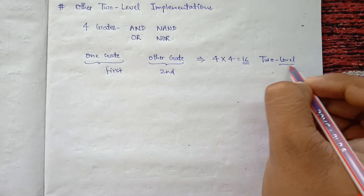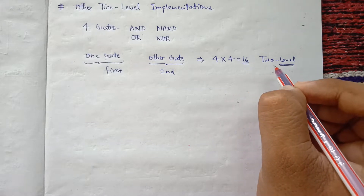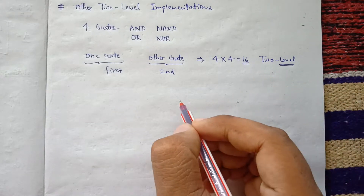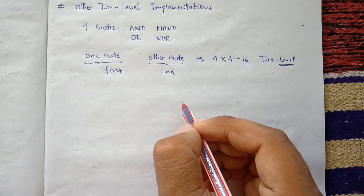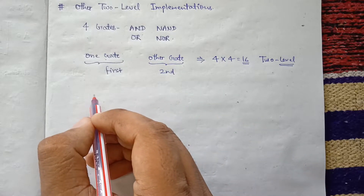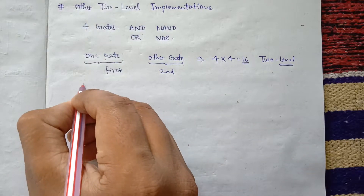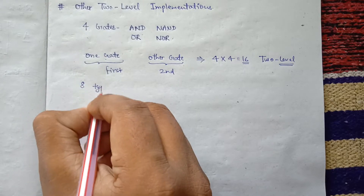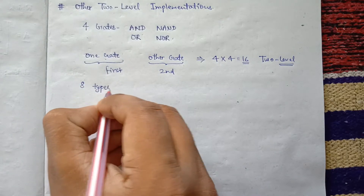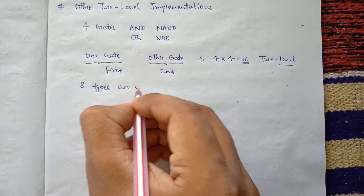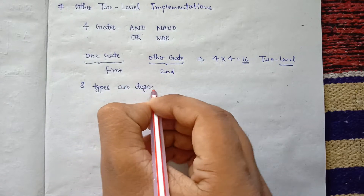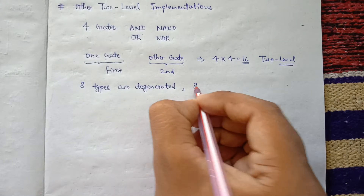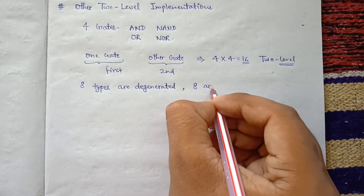So in total we get 16 two-level implementations, but out of those 16, eight are degenerated forms and the other eight are non-degenerated forms.